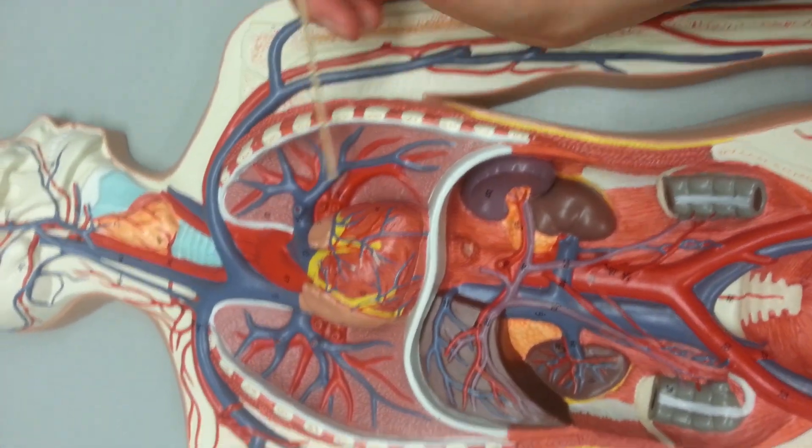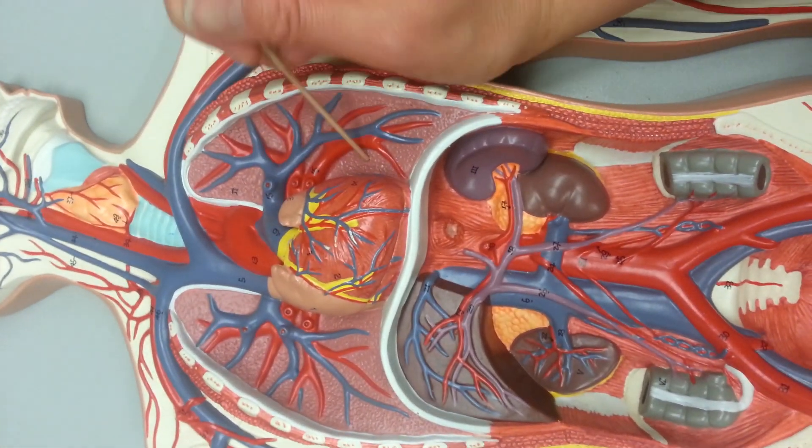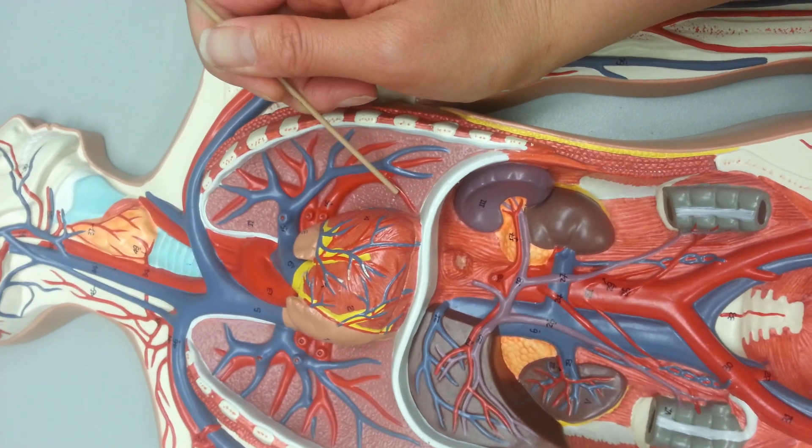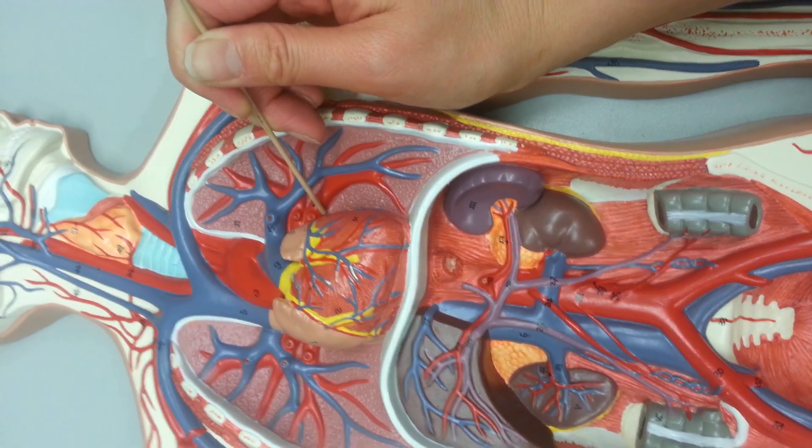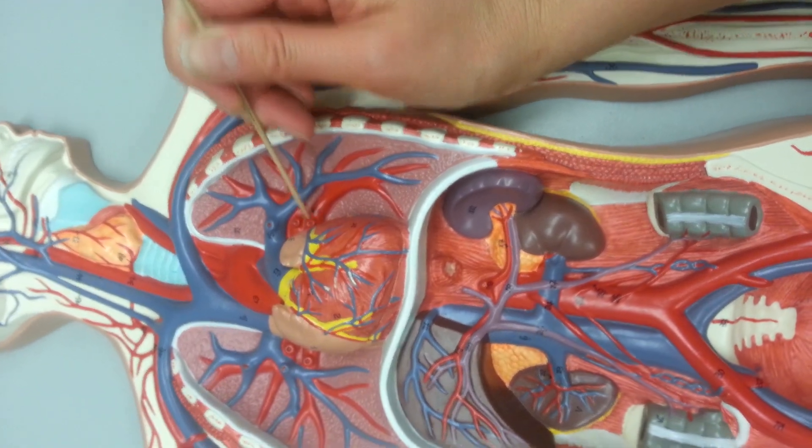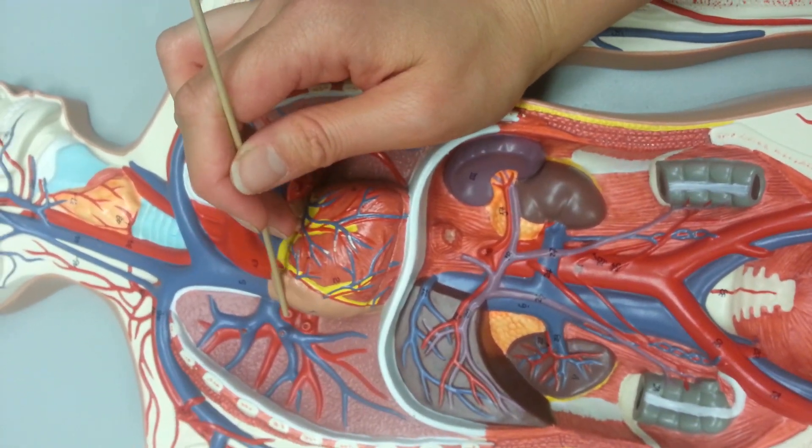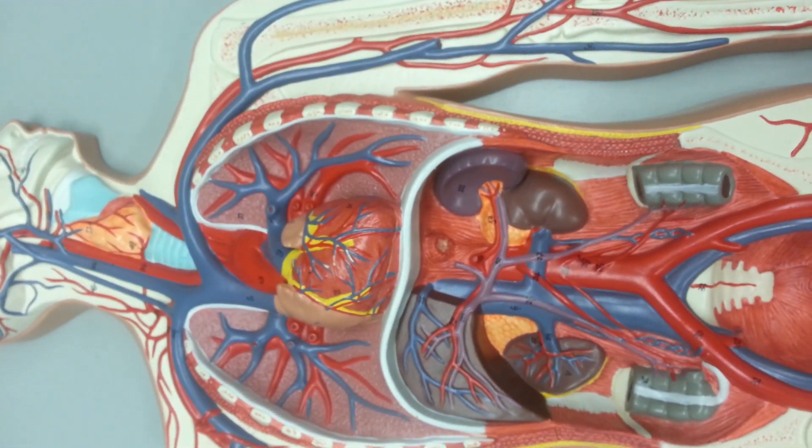Now we have pulmonary veins. Remember those veins just went to the lung to get oxygen, so we're going to look for bright red. Here we have the two pulmonary veins entering the left atrium on the left side, and then the two pulmonary veins on the right side also heading into the left atrium.